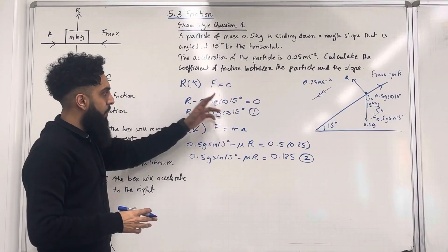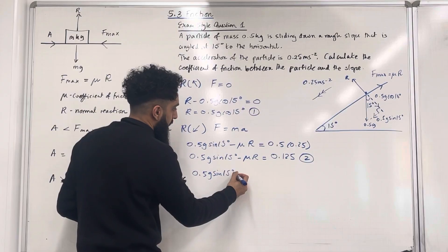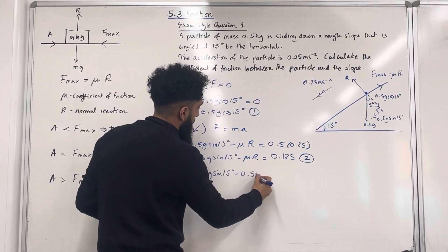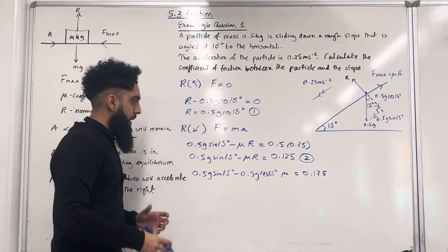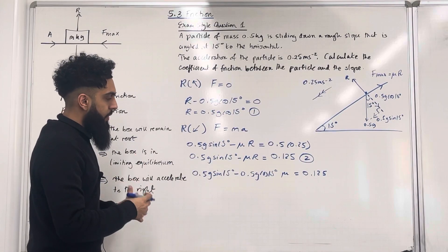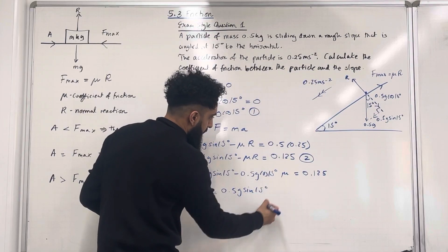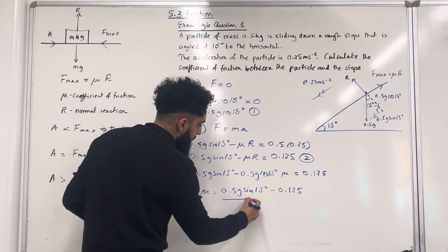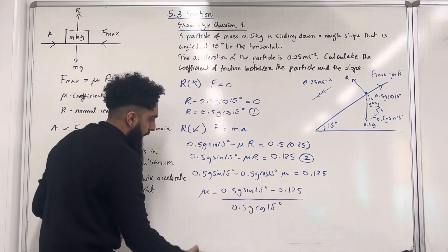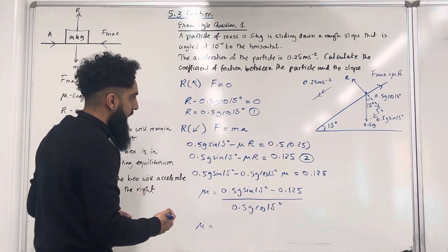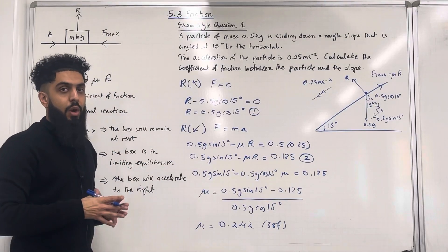Now I need to substitute equation 1 into equation 2 to eliminate R and find mu. Substituting gives: 0.5g sin 15 minus 0.5g cos 15 times mu equals 0.125. Rearranging to make mu the subject: mu equals (0.5g sin 15 minus 0.125) all over (0.5g cos 15). Putting this into the calculator to three significant figures gives mu equals 0.242. That is the coefficient of friction.